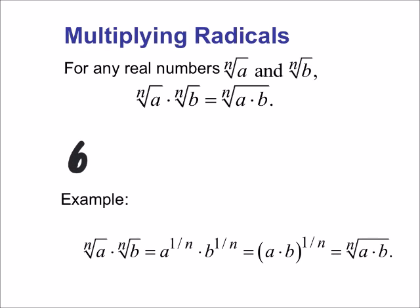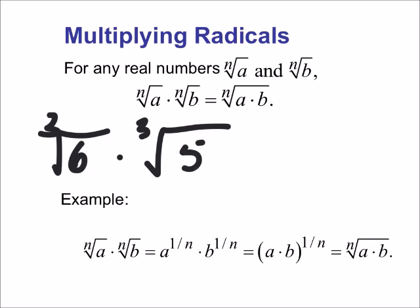So for example, if we had, I don't know, six - and we can take a third root of six and multiply it by the third root of five - well then we can, according to this rule, put both of these under the same third root like this.